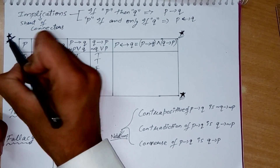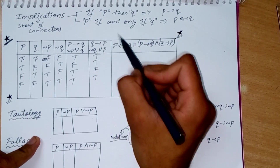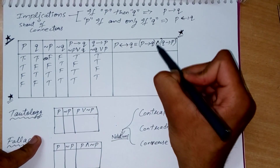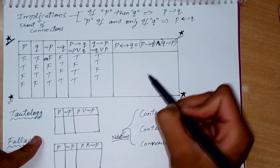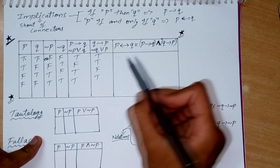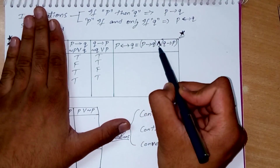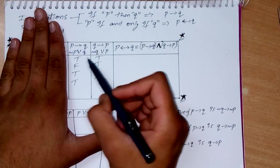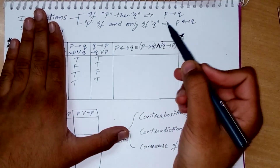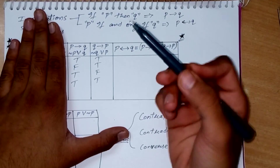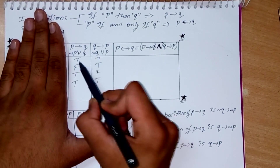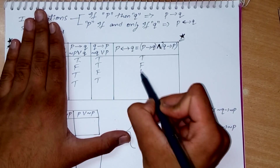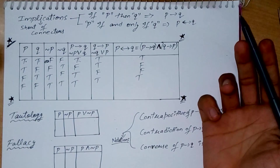Similarly, negation of Q or P: if one question is attempted, we get true; if both are attempted, true; if none are attempted, false; if one is attempted, true. The P if and only if Q connector is a combination of both, connecting them with an AND sign. We take true only when we get 10 marks.